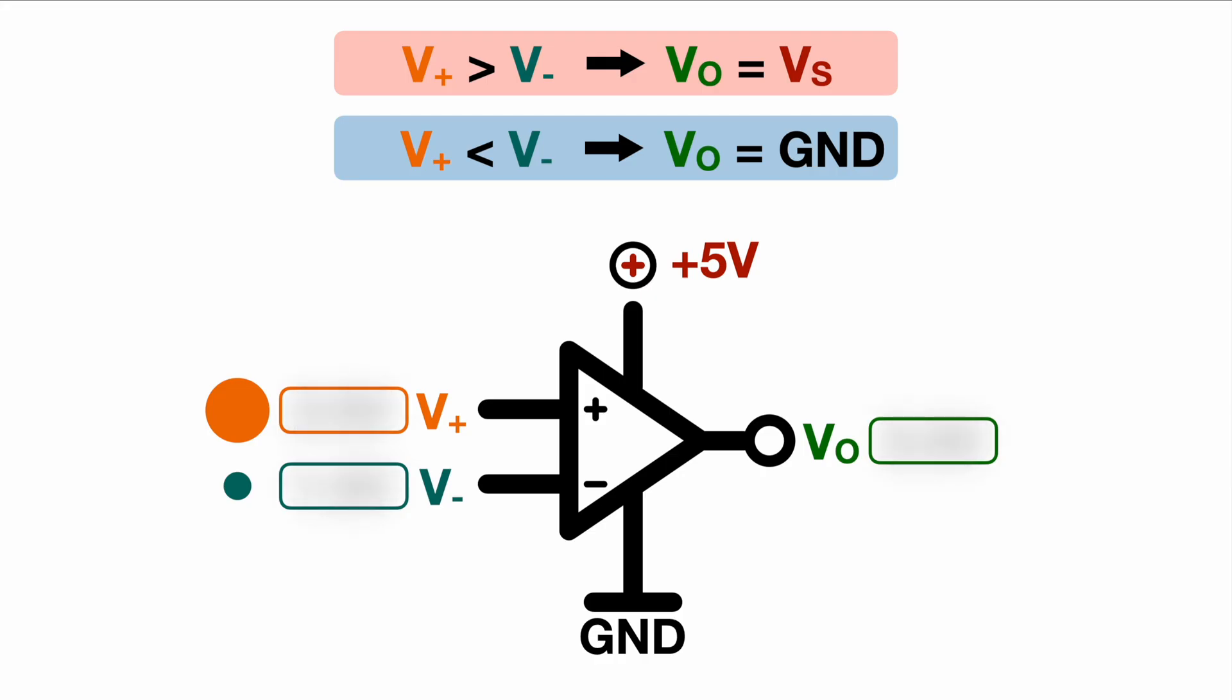Well let's move on to the second case. Let's assume V plus is 1.7 volts and V minus is 2.1 volts. So now the circumstance has changed so V plus is now smaller than V minus so we have the blue case so the output will jump to ground 0.0 volts.